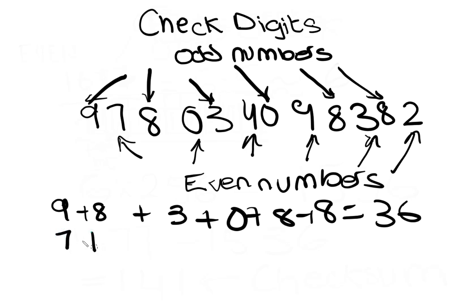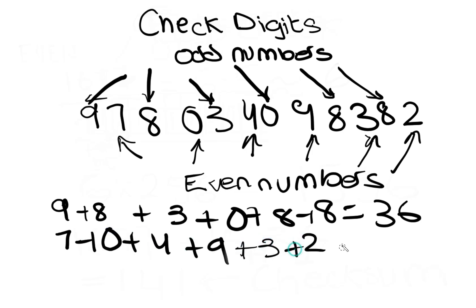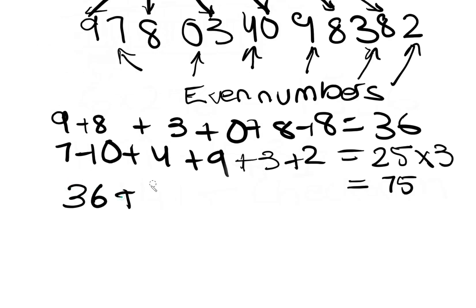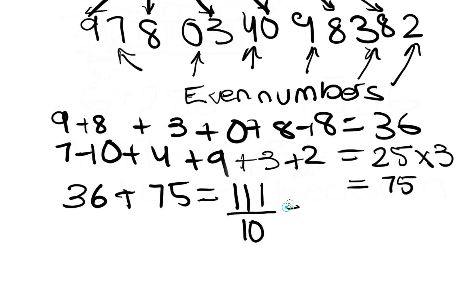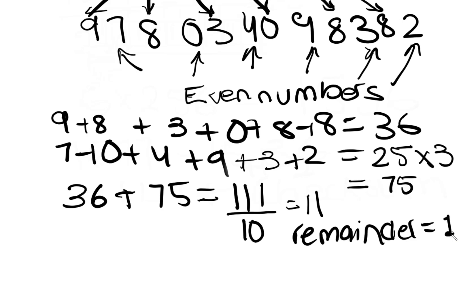Then we add all the even-position numbers together: 7 + 0 + 4 + 9 + 3 + 2 = 25. Now we multiply that result by 3, which gives us 75. Now we add these results together — 36 and 75 — which results in 111. We divide the result by 10, which gives us 11 with a remainder of 1. If the remainder is 0, use that value; otherwise, subtract the remainder from 10 to find the check digit. Since we have remainder 1, we subtract from 10 to get 9. This is the check digit.